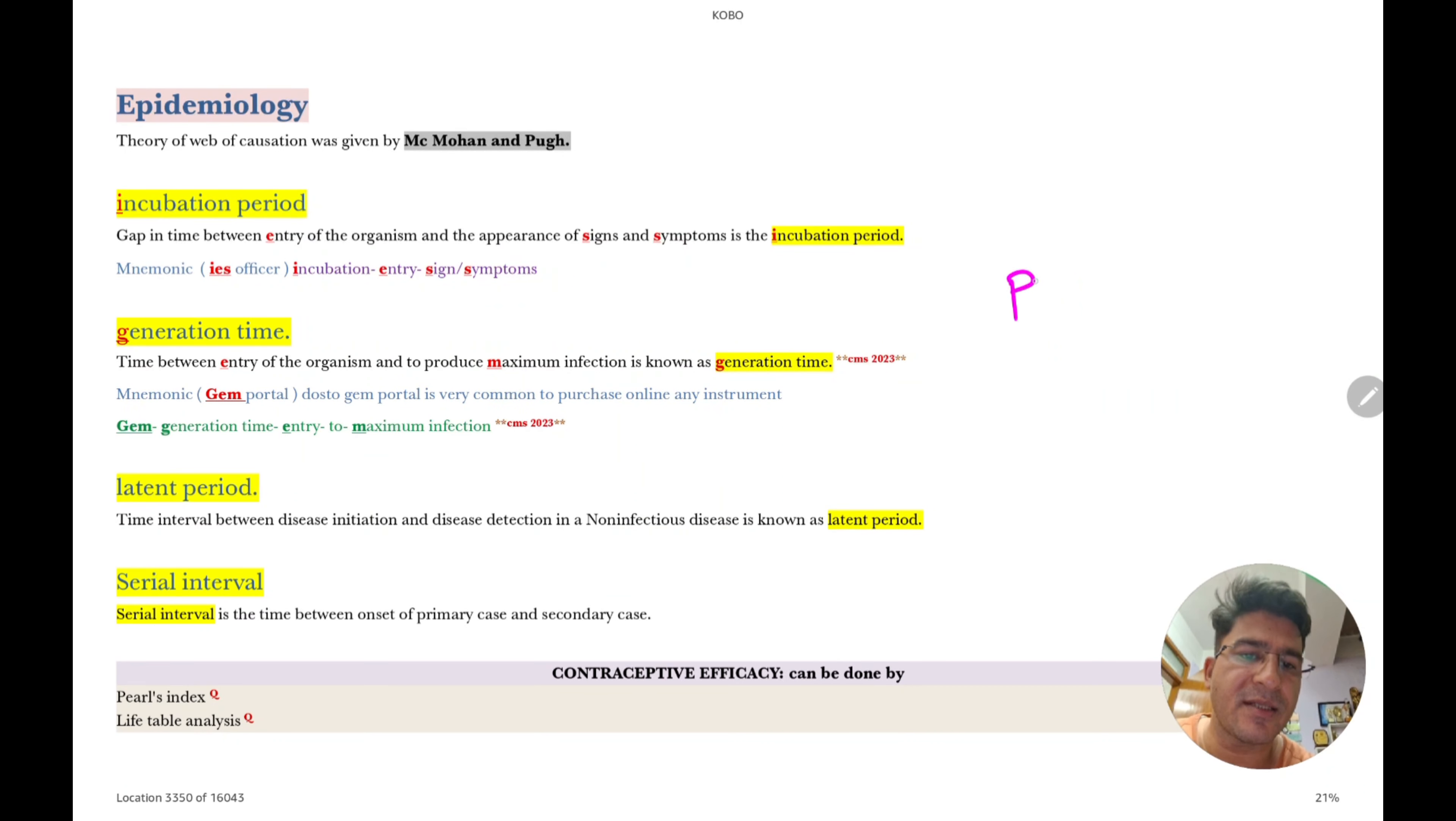So now it's time for PSM. From PSM you will get around 40 to 45 MCQs. And recently if you have seen a small window question, generation time. So what is generation time? Means pneumonia ke generation portal. Generation time is equal to entry to maximum infection. So what is the definition? Time between the entry of organism to produce maximum infection. So this is the mnemonic.